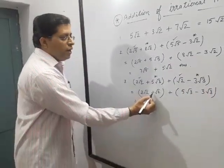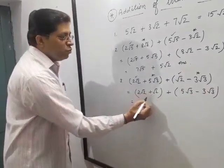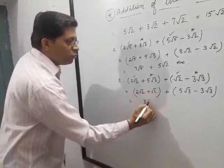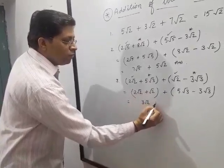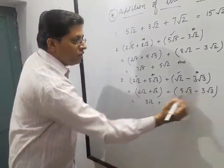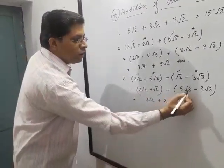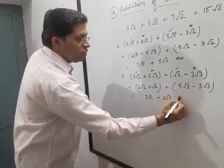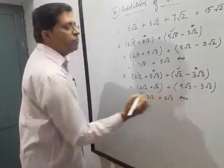See, 2 root 2 is here and this is called 1 root 2. 2 root 2 and 1 root 2, this will be 3 root 2. 5 minus 3 is 2 and root 3 is root 3. 5 root 3 minus 3 root 3 is 2 root 3. This is our answer. Thank you.